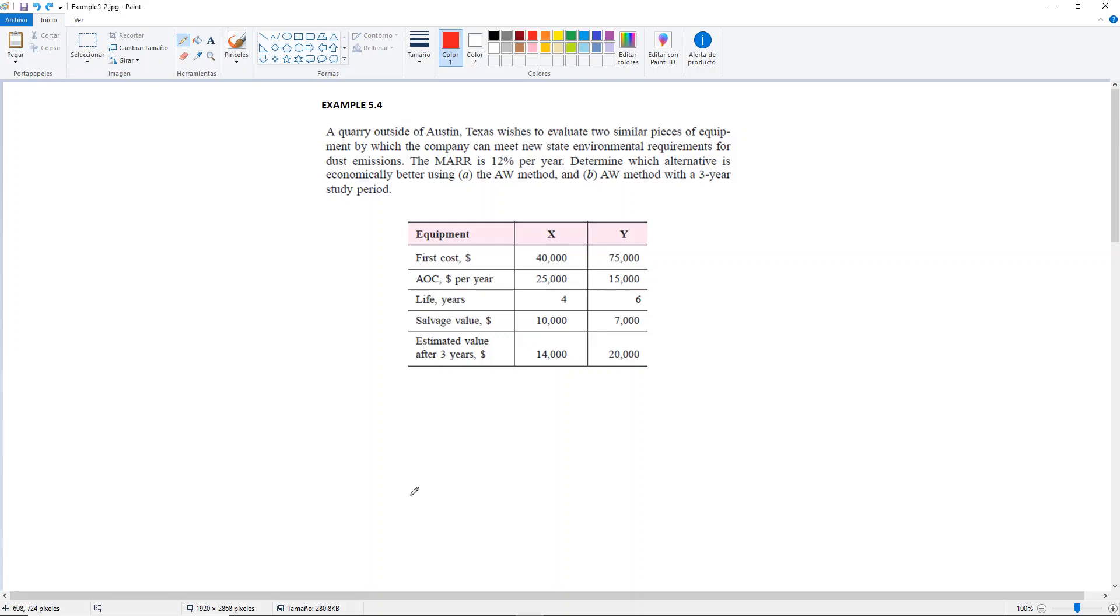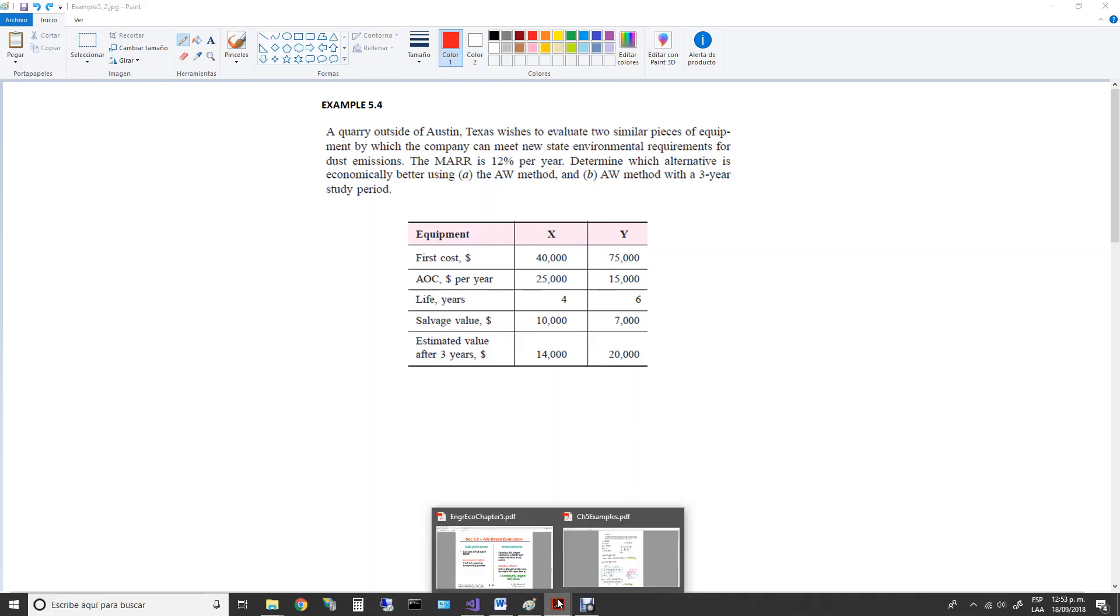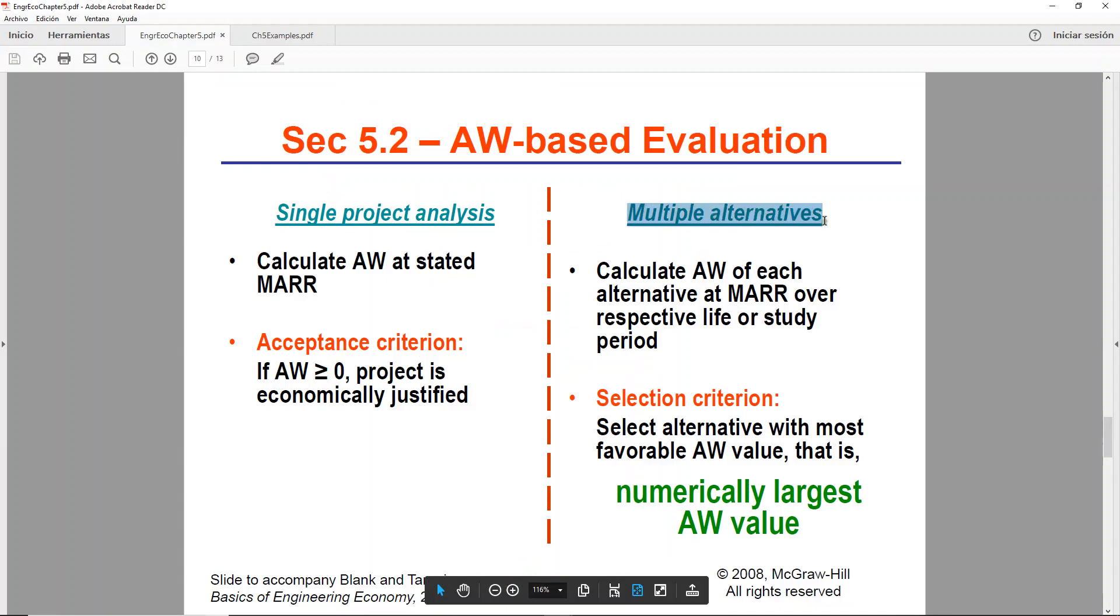Okay, so we have our two alternatives here and just a friendly reminder: if you are evaluating multiple alternatives, the process is going to be very similar to what we covered in chapter 4 for present worth, but in this case you're going to convert everything to annual and then compare the individual results and pick the numerical largest one, which is the value that will cost you the least per year.